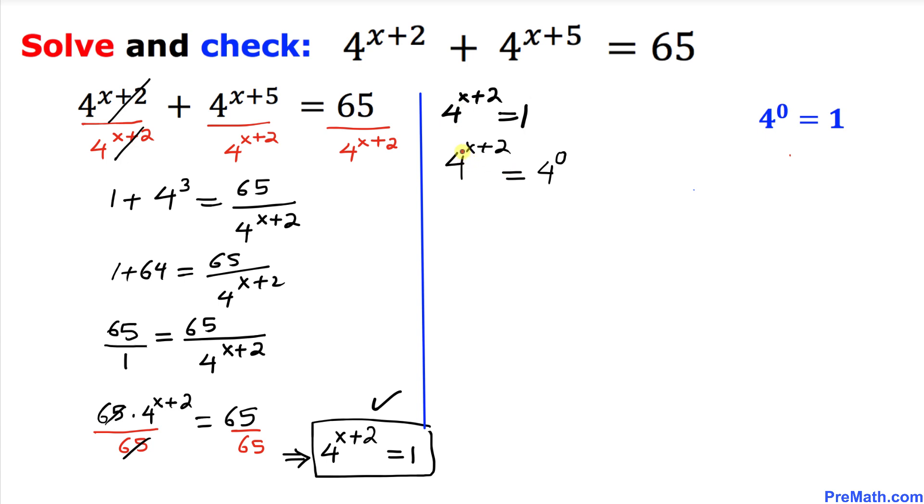In this equation we can see on both sides our base is 4. As long as our base is the same, we can equate our exponents as well. So therefore these exponents could be written as x+2 = 0, which means our x value turns out to be -2, and that is our solution.